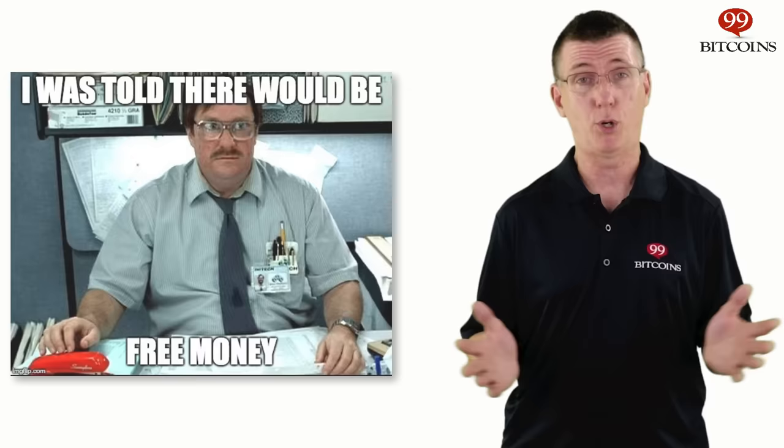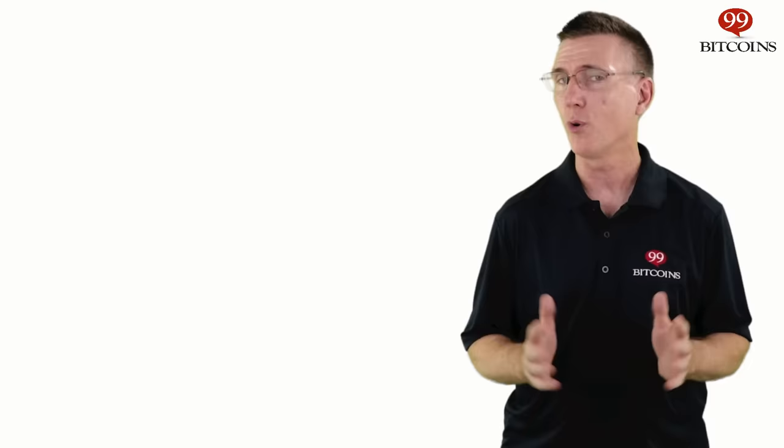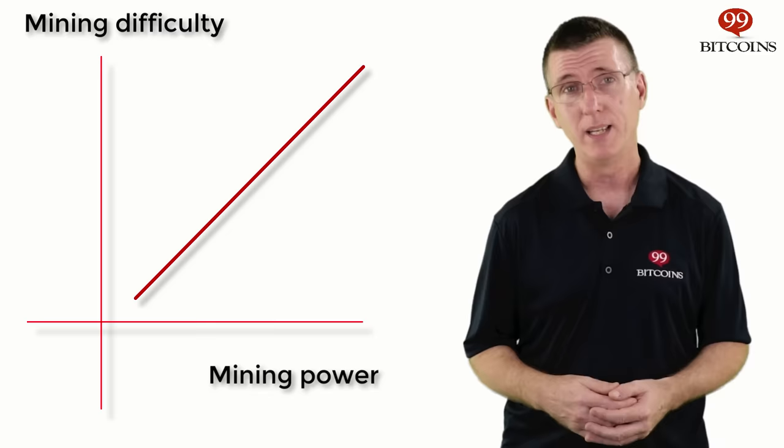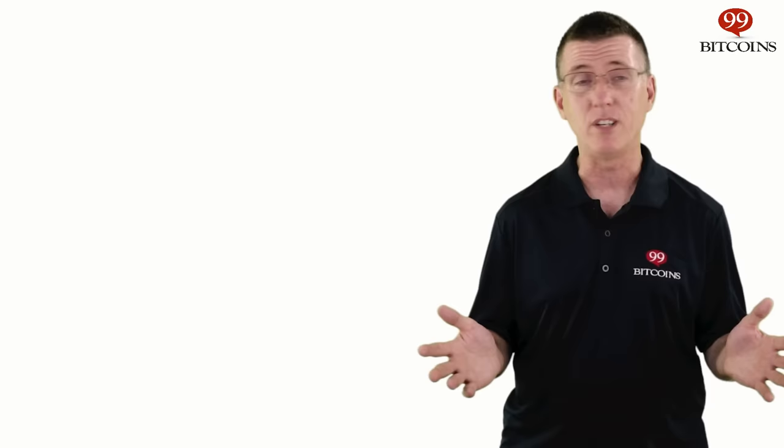Now that you know what Bitcoin mining is, you might be thinking, "cool, free money — so where do I sign up?" Not so fast. Satoshi Nakamoto, who invented Bitcoin, crafted the rules for mining in a way that the more mining power the network has, the harder it is to guess the answer to the mining math problem. The difficulty of the mining process is self-adjusting to the accumulated mining power the network possesses. If more miners join, it will get harder to solve the problem; if many drop off, it will get easier. This is known as the mining difficulty.